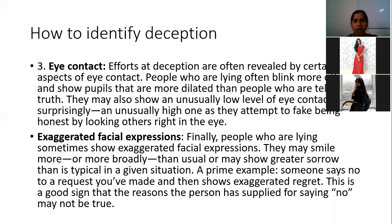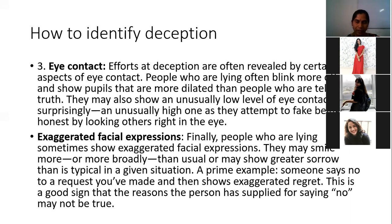Efforts at deception are often revealed by certain aspects of eye contact. People who are lying often blink more and show more dilated pupils than people who are telling the truth. They may also show an unusually low level of eye contact, or surprisingly, an unusually high amount of eye contact — their attempt to fake being honest by looking others right in the eyes. Some people look downward when lying, but some people very daringly maintain a very strong, abnormal eye contact and tell a lie.